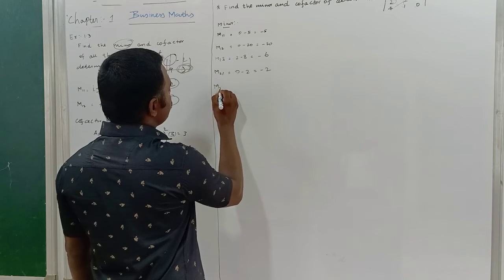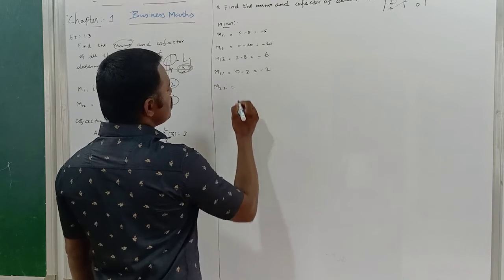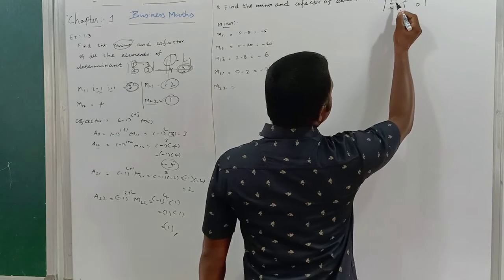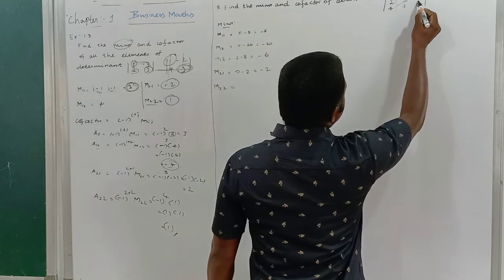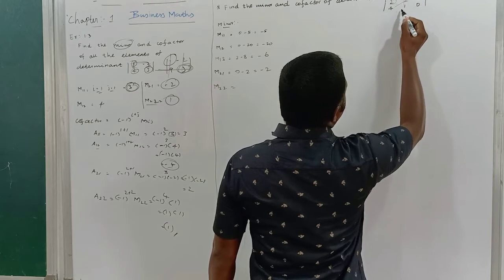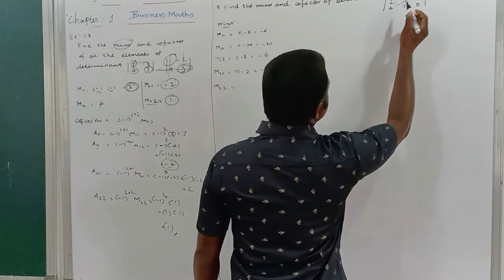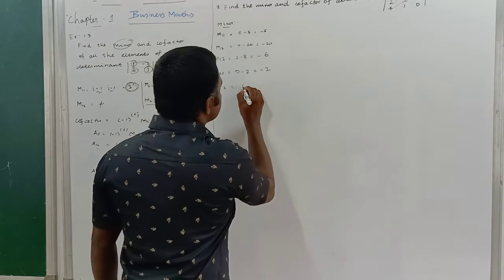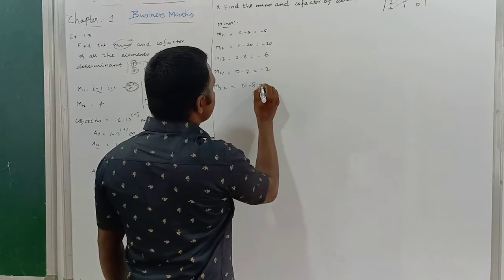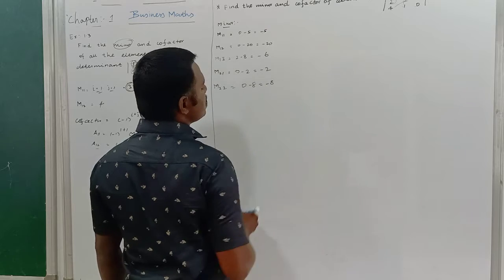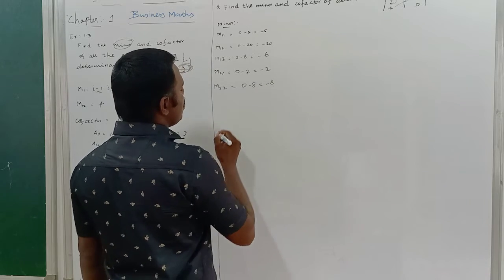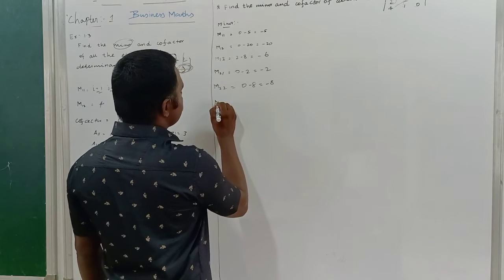Minor M22: second row, second column. I remove that row and column, leaving 0 and minus 8. So M22 = minus 8.